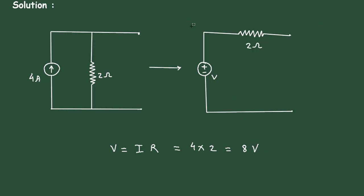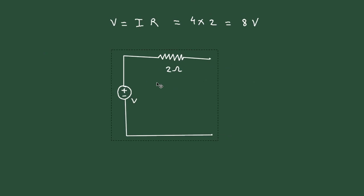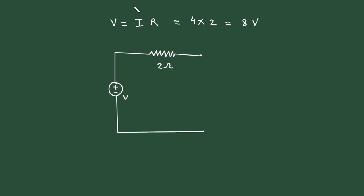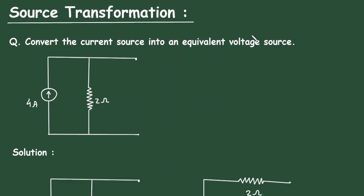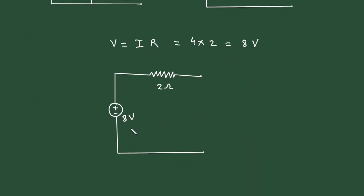So we can copy this circuit and replace this V by its value and it is 8 volt. This will be of 8 volt. So this is how we can convert current source into its equivalent voltage source.